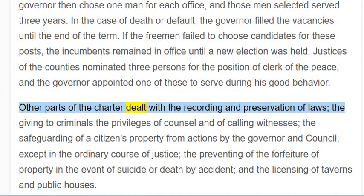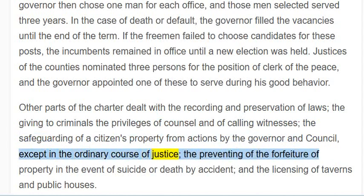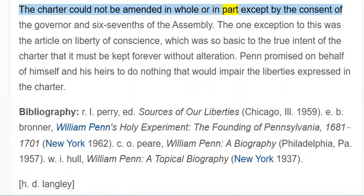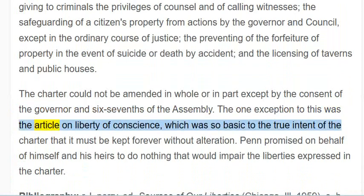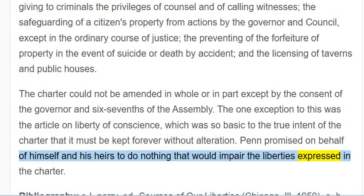Other parts of the charter dealt with the recording and preservation of laws, the giving to criminals the privileges of counsel and of calling witnesses, the safeguarding of a citizen's property from actions by the governor and council except in the ordinary course of justice, the preventing of the forfeiture of property in the event of suicide or death by accident, and the licensing of taverns and public houses. The charter could not be amended in whole or in part except by the consent of the governor and six-sevenths of the assembly. The one exception was the article on liberty of conscience, which was so basic to the true intent of the charter that it must be kept forever without alteration. Penn promised on behalf of himself and his heirs to do nothing that would impair the liberties expressed in the charter.